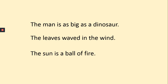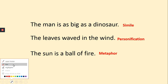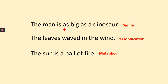Let's go through the answers. The first one is a simile. The second one is personification. The third one is a metaphor. How do you know that the first sentence is a simile? Because it uses the word 'as' — it's saying that he's similar to the dinosaur, but he is not the dinosaur.